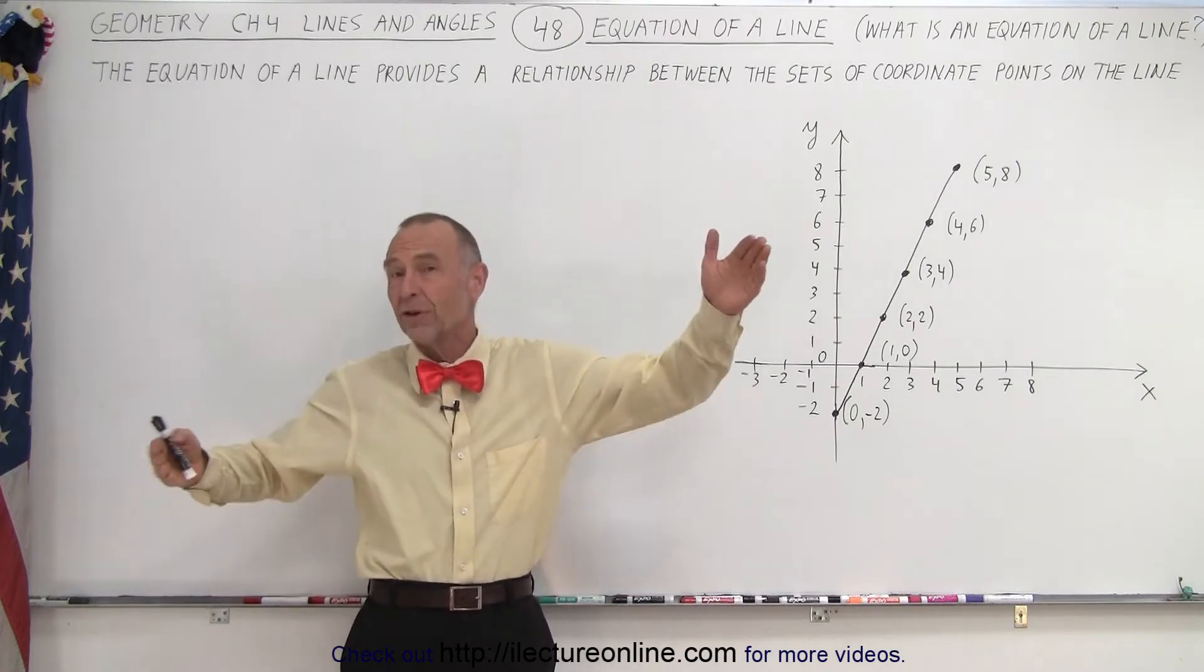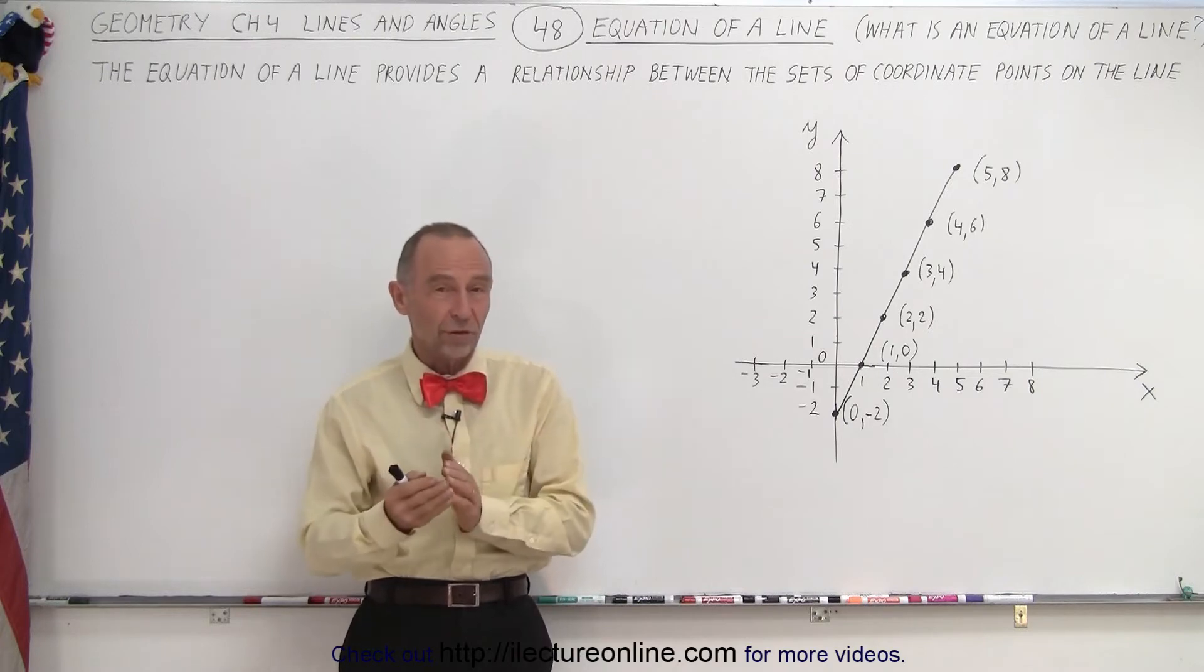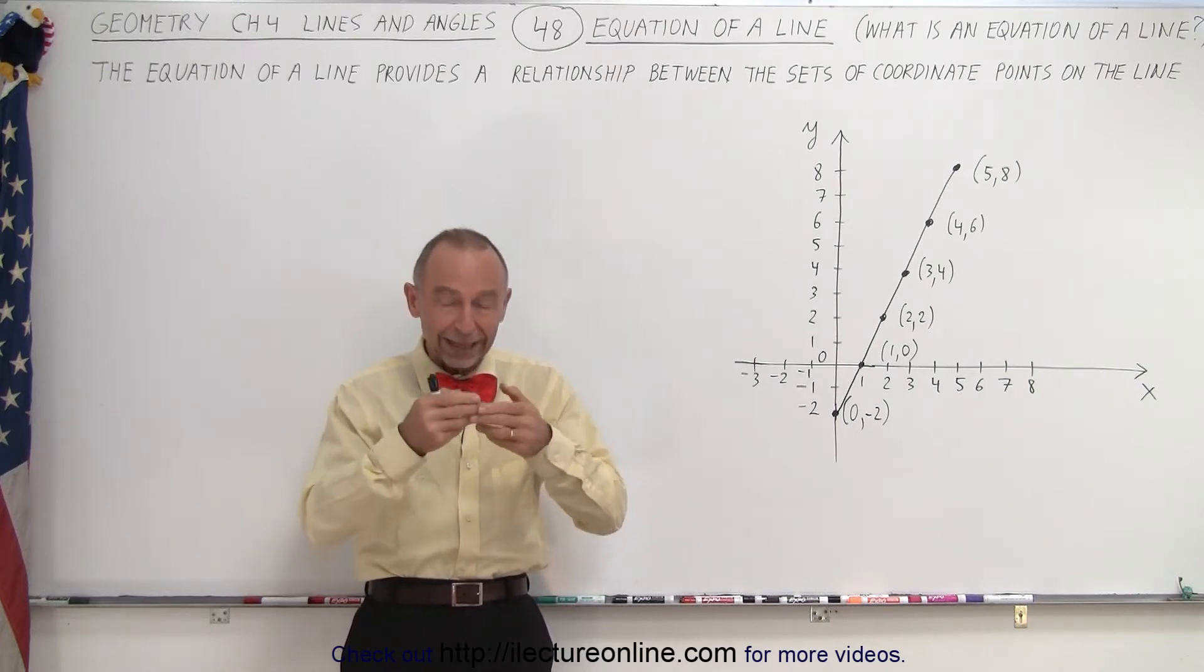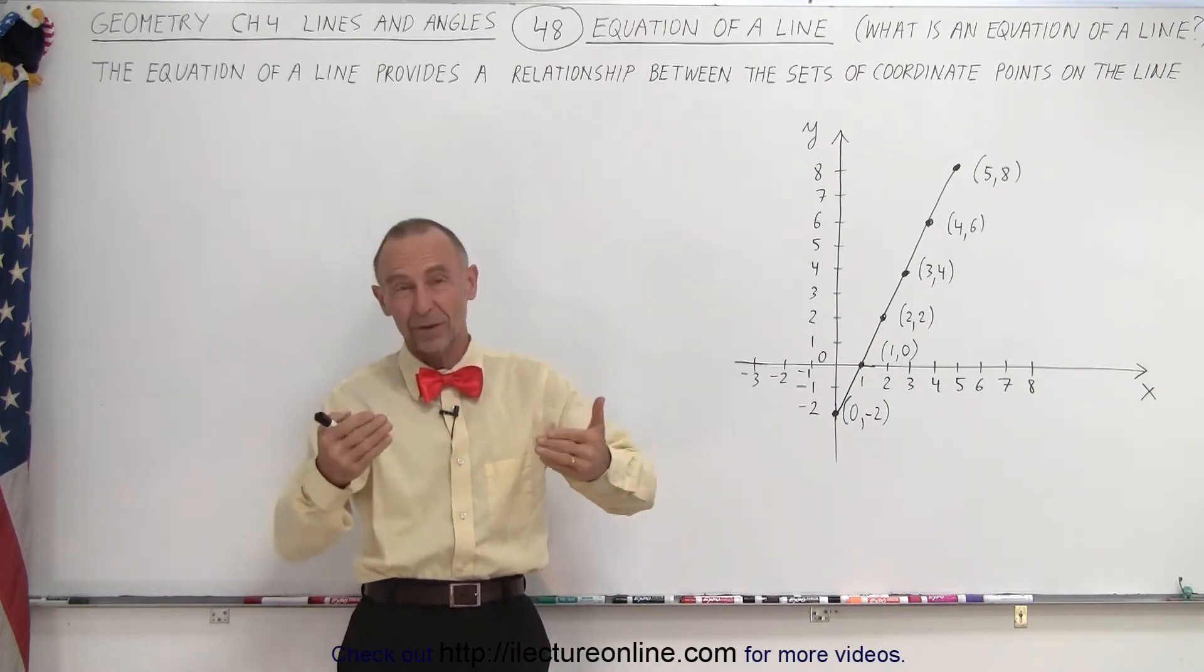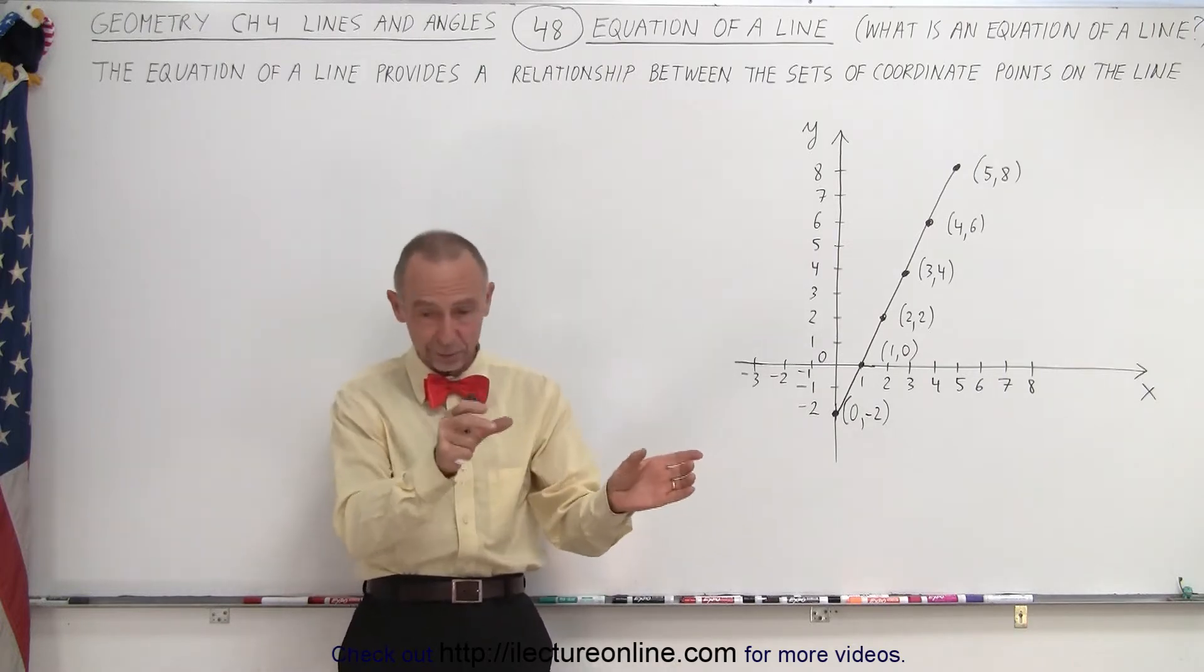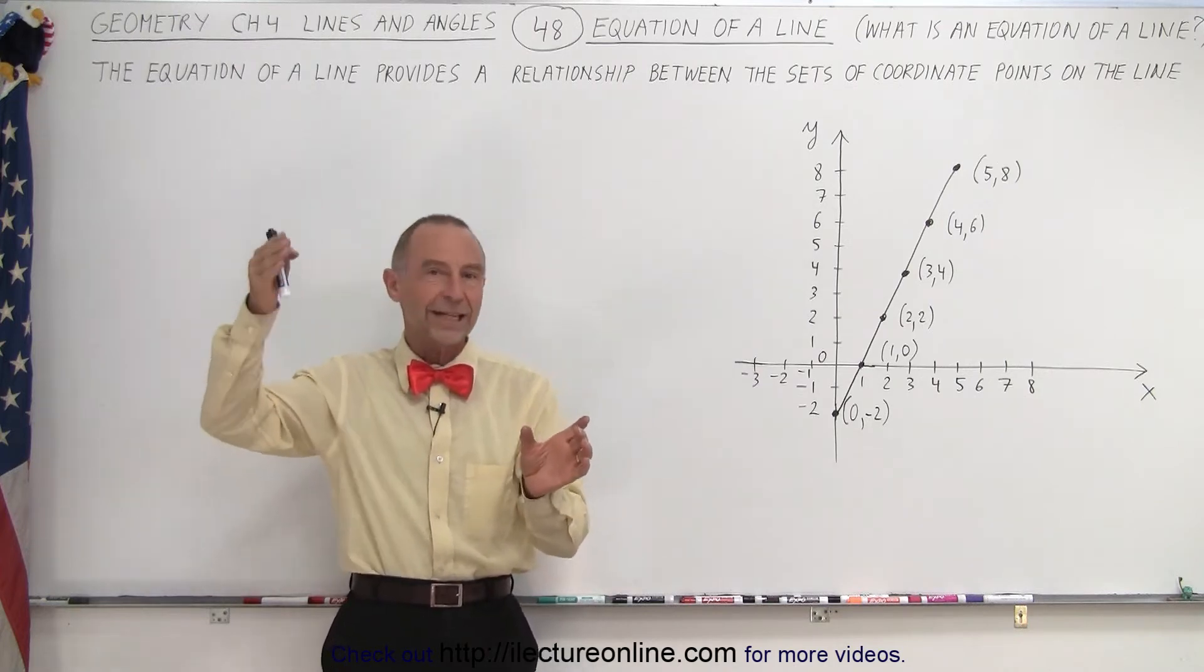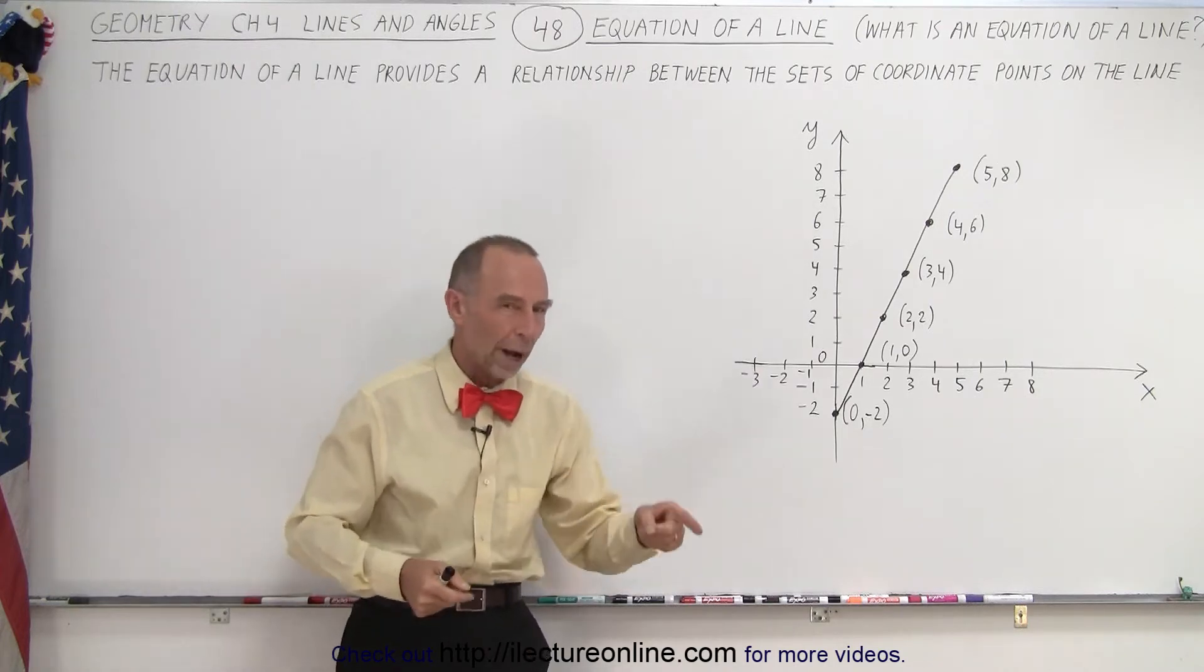Of course there's an infinite number of points on any line and there's a relationship between the x and the y coordinates. If you can somehow write an equation, an equation is something that has a left side, a right side, and an equal sign which means the left side equals the right side. Essentially it equates a value for the x coordinate to a value for the y coordinate.